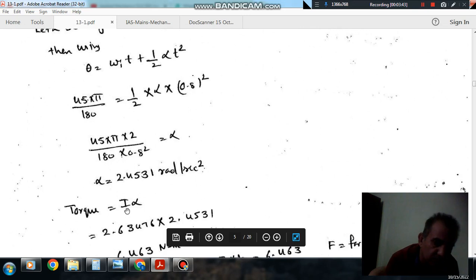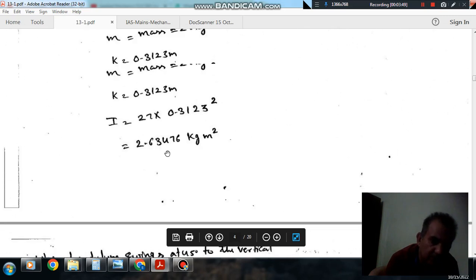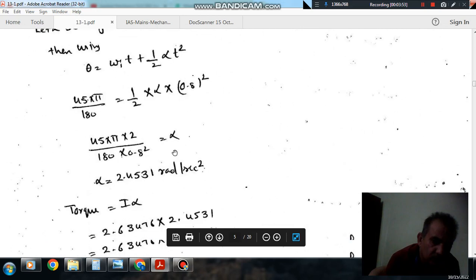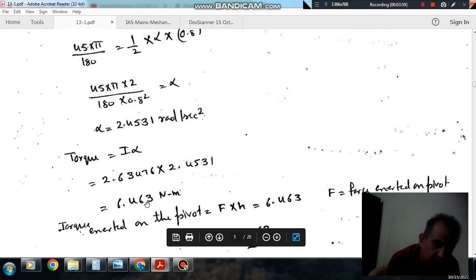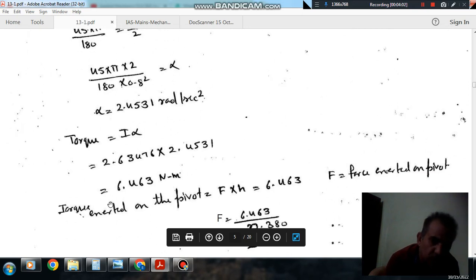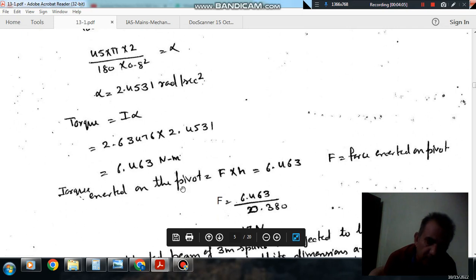That is the angular acceleration of the center of mass also. And the moment of inertia about center is I. The torque applied is I into alpha and I is moment of inertia about the center of mass. So, this is your torque applied, that is 6.463 Newton meters.